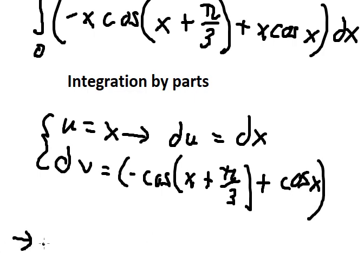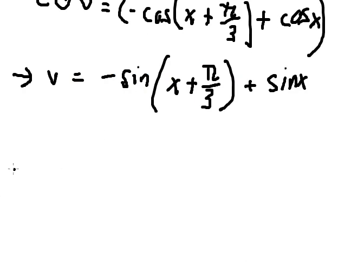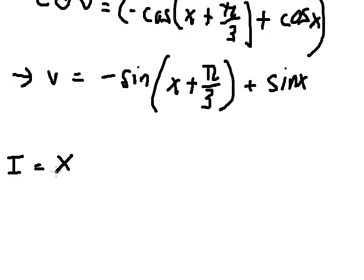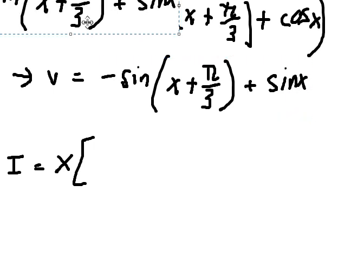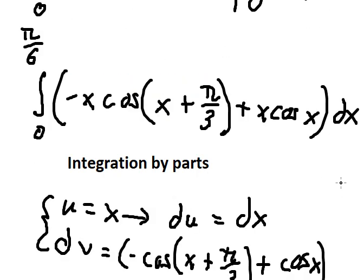So the integration of dv gives us negative sine of x plus π/3 and sine x. We have I equals u multiplied by v, so that should be x multiplied by this expression, and then I will put the bounds from 0 to π/6.